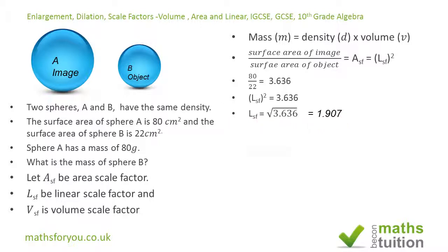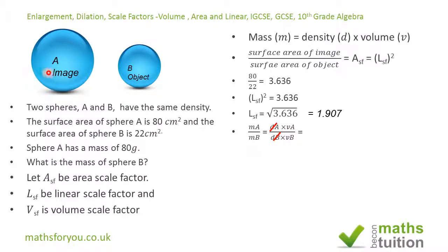Now, the mass of the image equals density times volume of the image, and the mass of the object equals the density times volume of the object. Because the density is the same for both spheres, the densities cancel out, and we're left with the ratio of volumes: volume of A divided by volume of B, which gives us the volume scale factor V_SF.